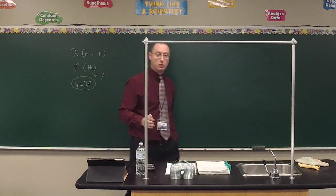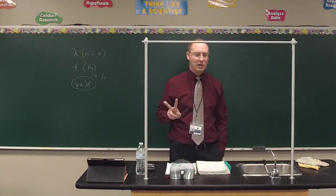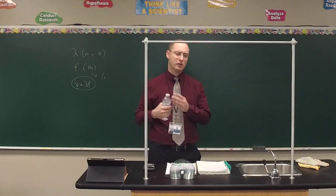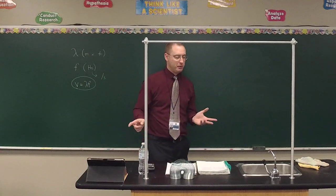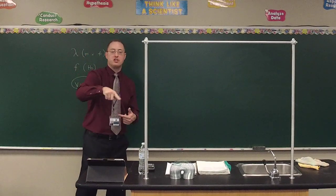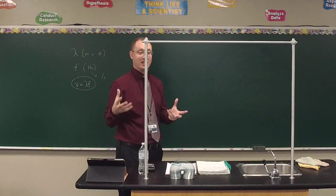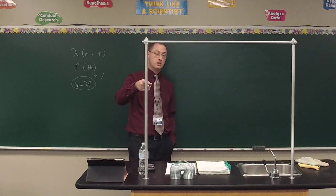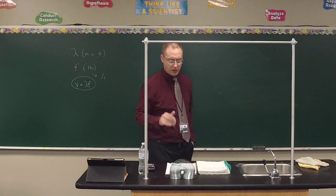We also talked about wave speed in the sense of waves traveling through a wire or cord. Two things primarily affect how quickly a wave travels through a cord. The first is the thickness — or mass per unit length. A thicker rope will have a slower wave speed because there are more particles for the energy to displace.